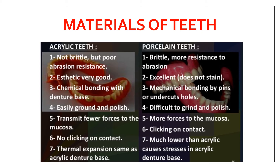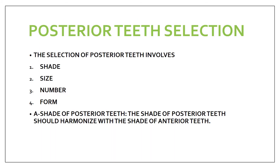That covers anterior teeth selection. Artificial teeth materials are either acrylic or porcelain — a commonly asked short answer question. Moving on to posterior teeth selection, it involves four factors: shade, size, number, and form. Shade is less important for posterior teeth since they mainly function for mastication rather than aesthetics. The shade of posterior teeth should harmonize with the shade of the anterior teeth.